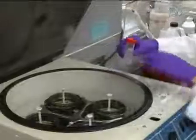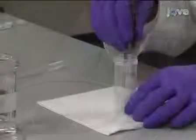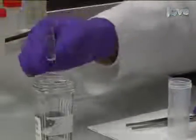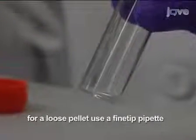After centrifugation, remove the flat bottom glass tube from the plastic carrier tube and pour off the supernatant, taking care not to disturb the flat layer of cell sediment at the bottom.